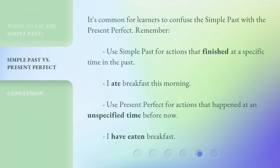It's common for learners to confuse the simple past with the present perfect. Remember, use the simple past for actions that finished at a specific time in the past — for example, 'I ate breakfast this morning.' Use the present perfect for actions that happened at an unspecified time before now — for example, 'I have eaten breakfast.'